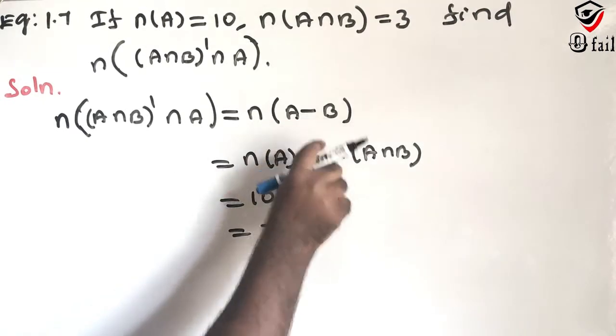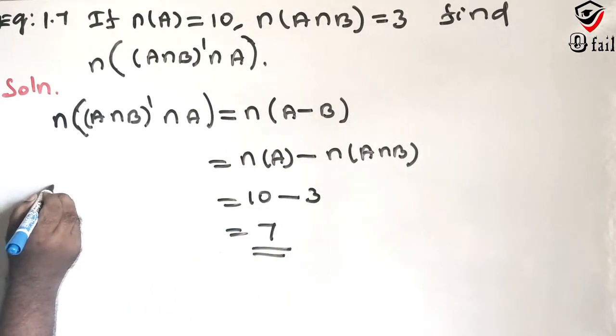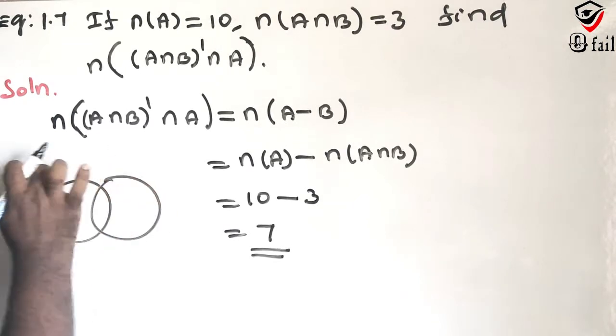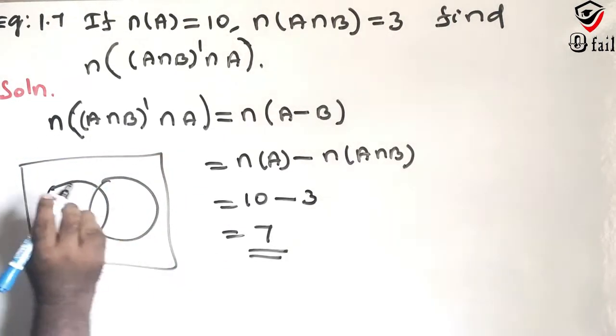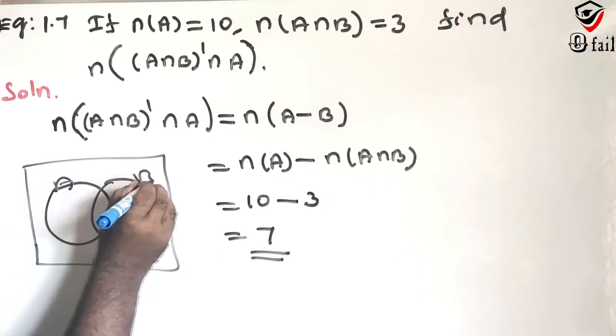It says A difference B. We have a simple set. We can explain it if you want to explain it in the exam. So A is here, B is here.